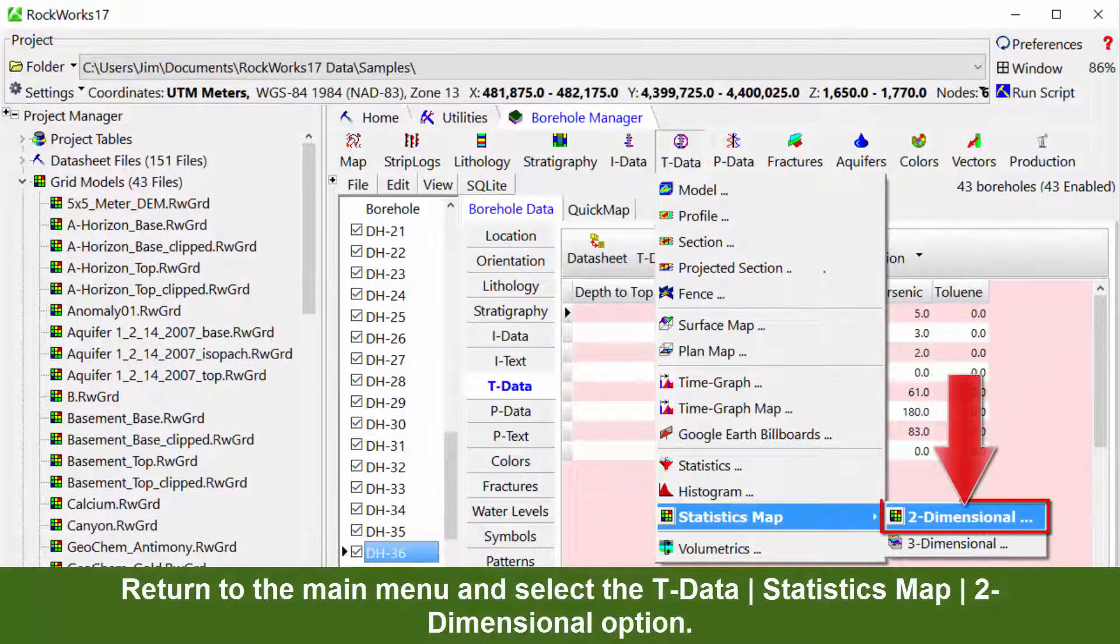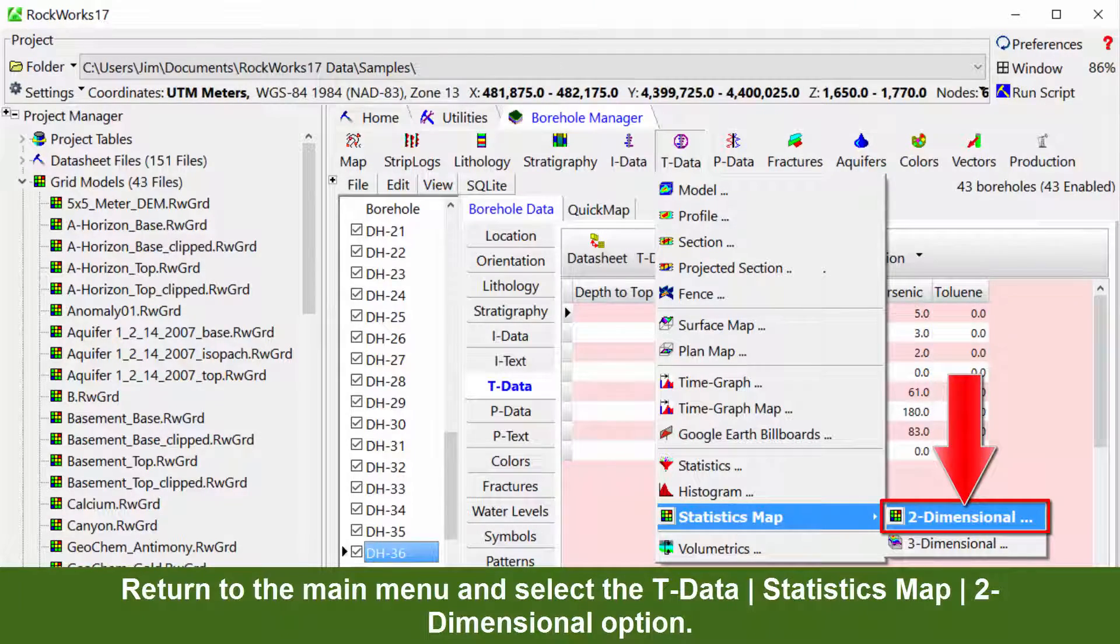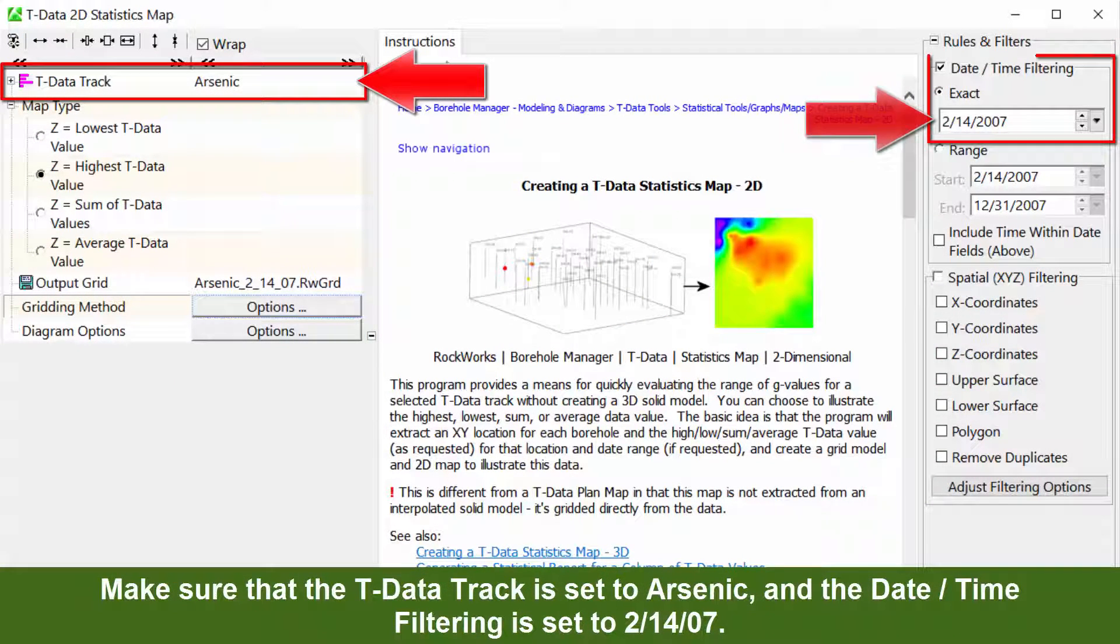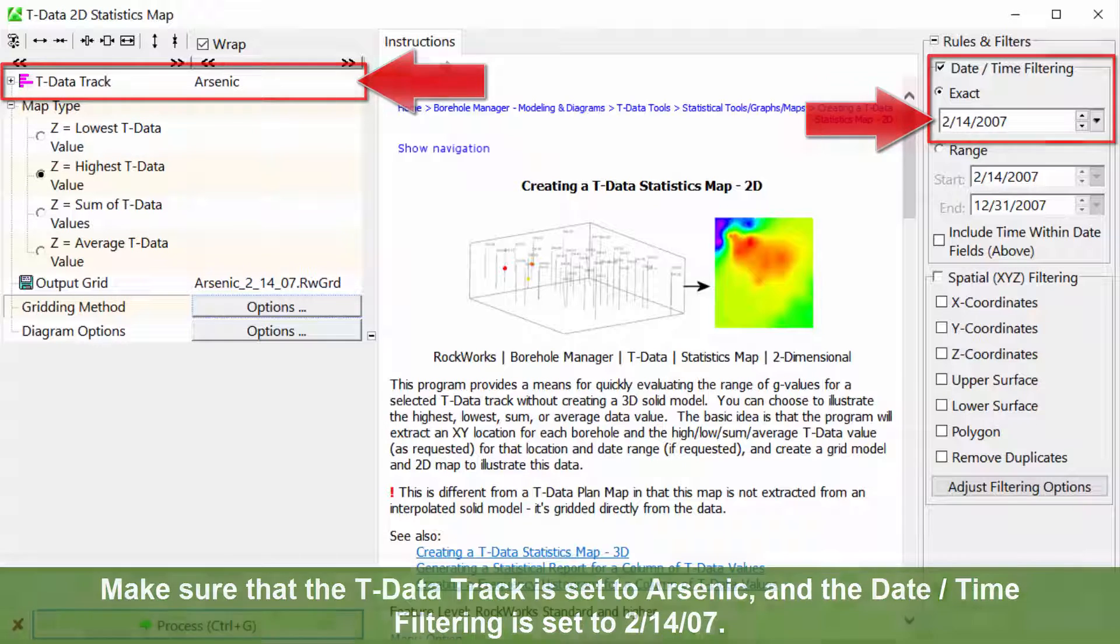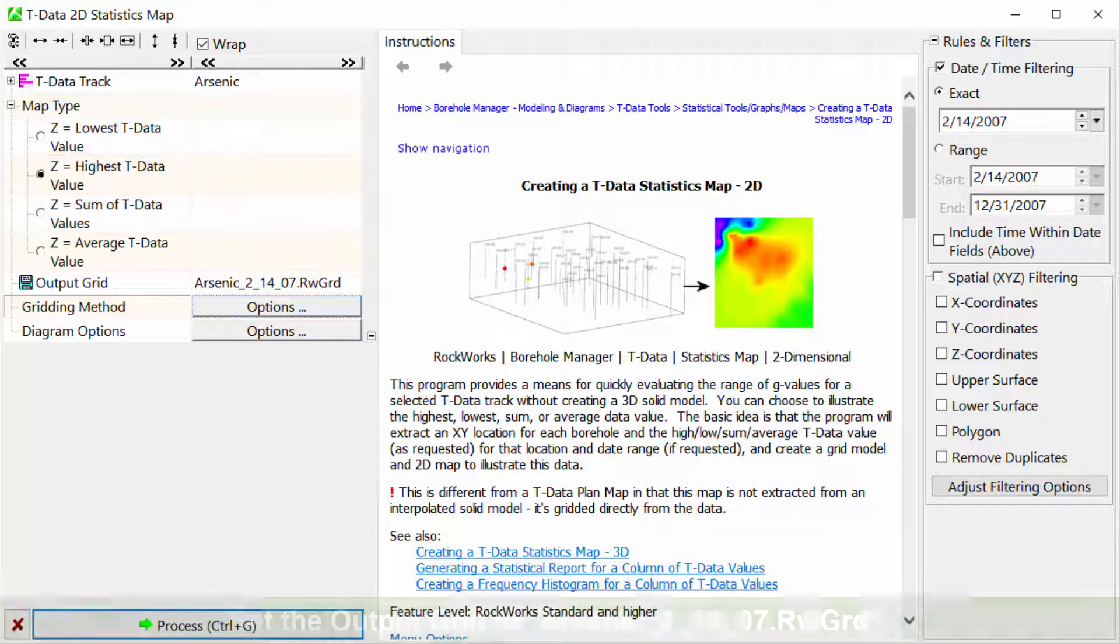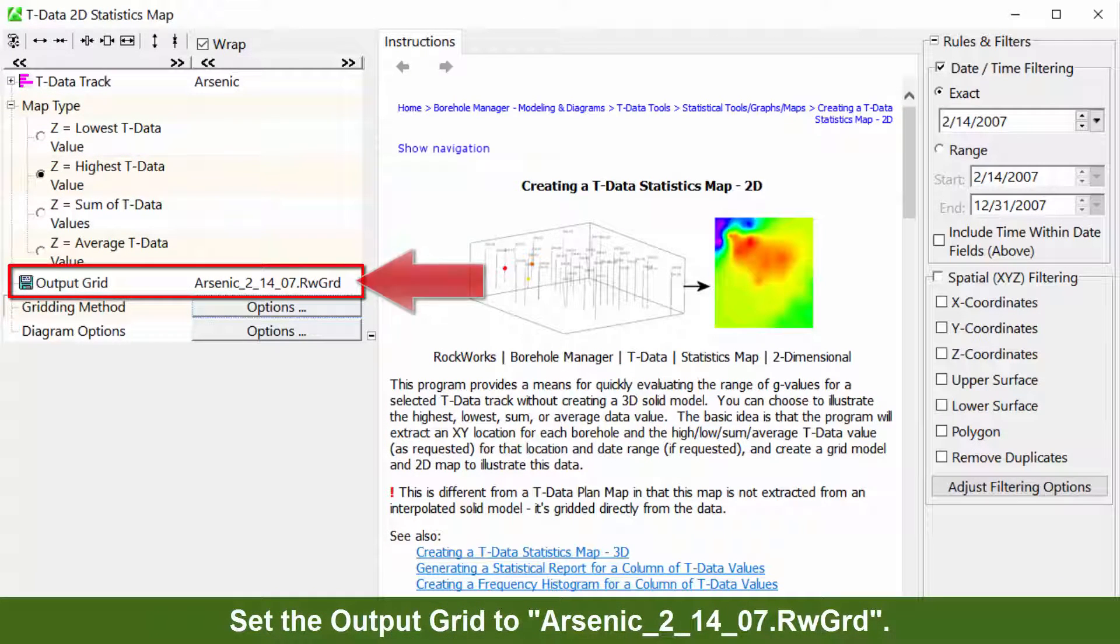Return to the main menu and select the T-Data Statistics Map 2-Dimensional option. Make sure that the T-Data track is set to Arsenic and the Date-Time filtering is set to 2-14-07. Select the Z equals highest T-Data value option. Set the output grid to Arsenic_2_14_07.RWGRD.